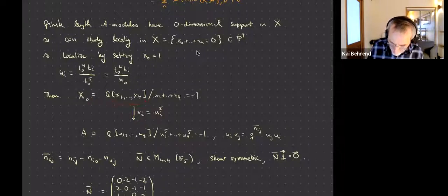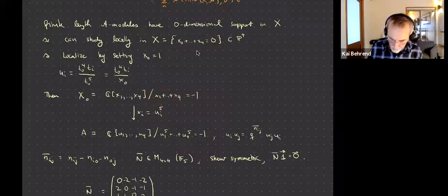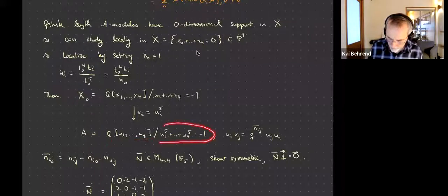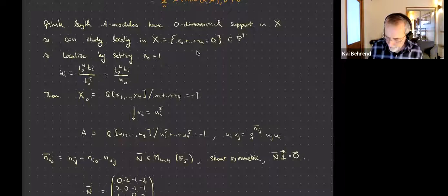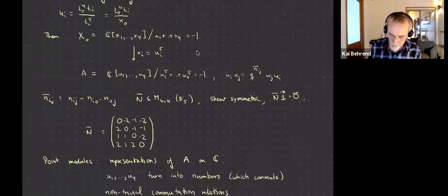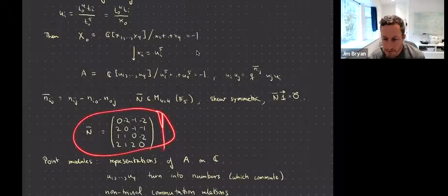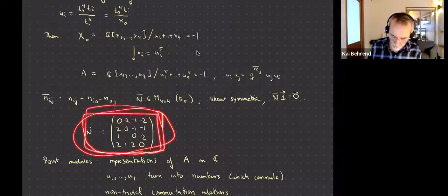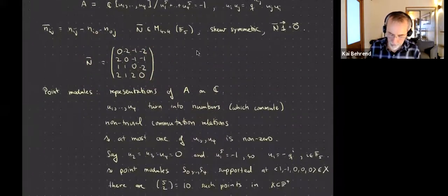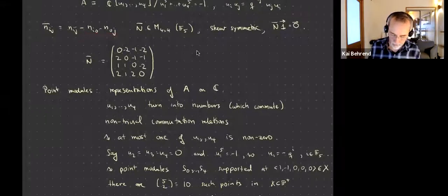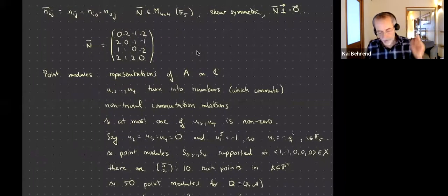After de-homogenizing: the linear equation becomes that the coordinates sum to minus one, and the noncommutative algebra is generated by four generators U_1 through U_4 with commuting relations governed by a four-by-four matrix, which is straightforward to compute. Let's first look at the point modules — where n equals one — so the underlying O_X-module has length one.